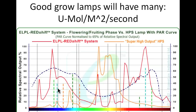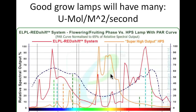Now we've normalized the parlite curve to match up to one of our lamps — this would be the ELPL redshift system. You can see we're putting a lot of light in the blue spectrum and a lot of light in the red spectrum. We don't waste too much light in the middle, unlike other lamps, including high-pressure sodium.